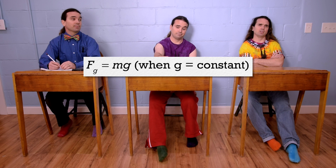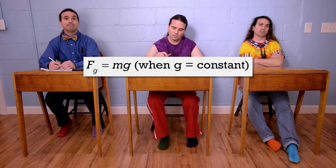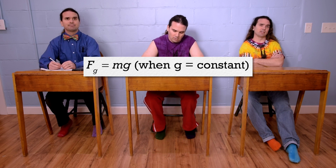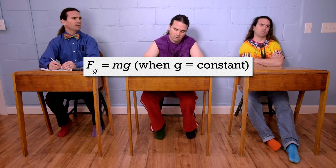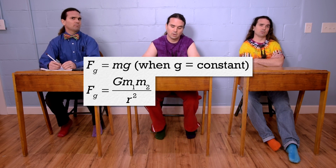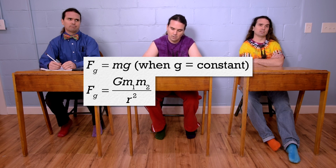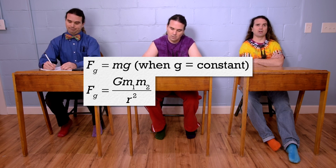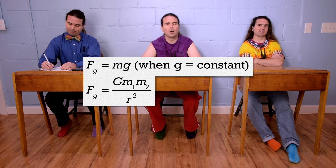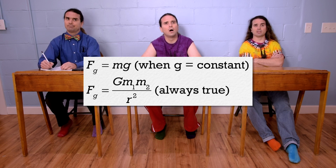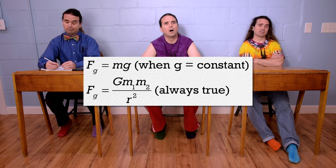Thanks Billy. The other equation is Newton's universal law of gravitation, where the force of gravity equals the universal gravitational constant times mass 1 times mass 2, all divided by the square of the distance between the centers of mass of the two objects. And we can always use that equation even if the acceleration due to gravity is not constant.